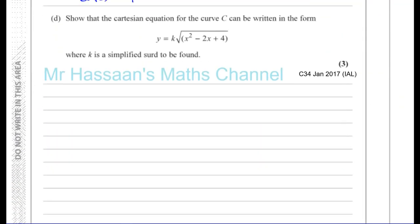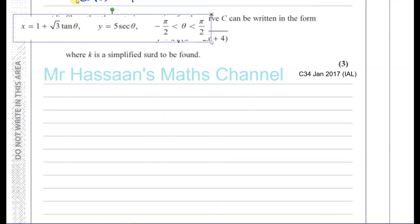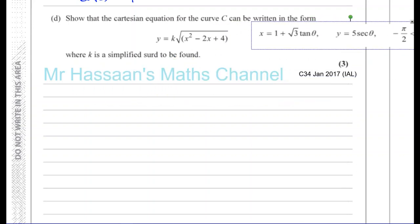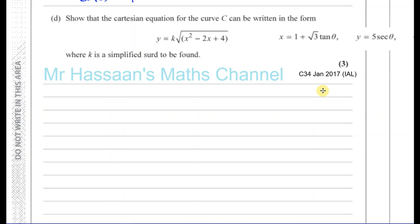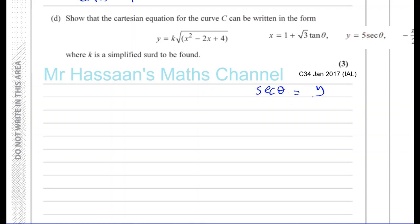The next part asks us to convert to Cartesian form — the equation written with just x and y, without the parameter theta. Making sec theta the subject of the y equation: sec theta equals y over 5. Making tan theta the subject of the x equation: tan theta equals x minus 1 divided by root 3. Now I need a relationship between sec theta and tan theta.